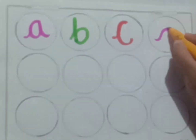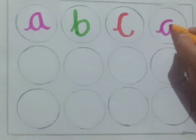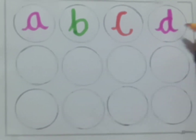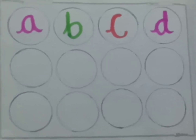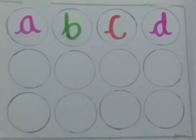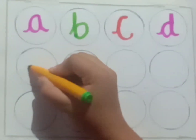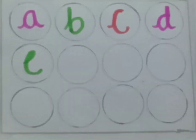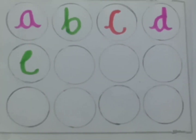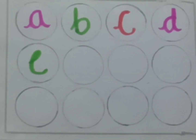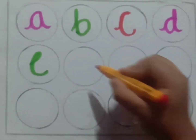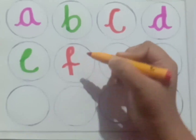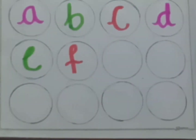D. D for dog. E. E for elephant. F. F for fish.